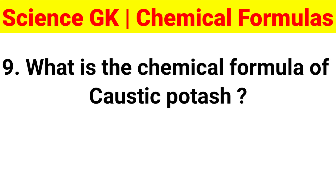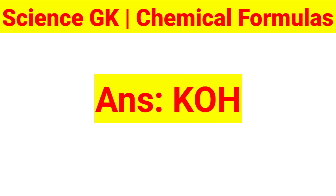Question 9: What is the chemical formula of caustic potash? Answer: KOH.